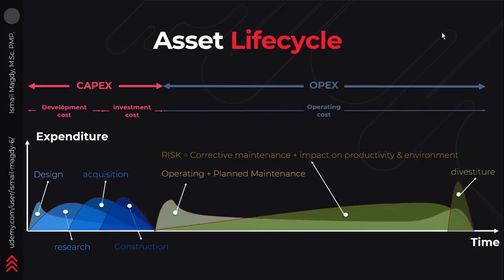Here we can see the distribution of the full asset costs through its lifetime. We have the CAPEX costs, including design, research, acquisition, and construction of the asset. Then we have the OPEX costs, which includes operation plus planned maintenance costs. We also have risk costs, which includes corrective maintenance due to failures, in addition to the impact on productivity and environment — and we can see that this cost increases over time. Finally, we have the disposal costs.